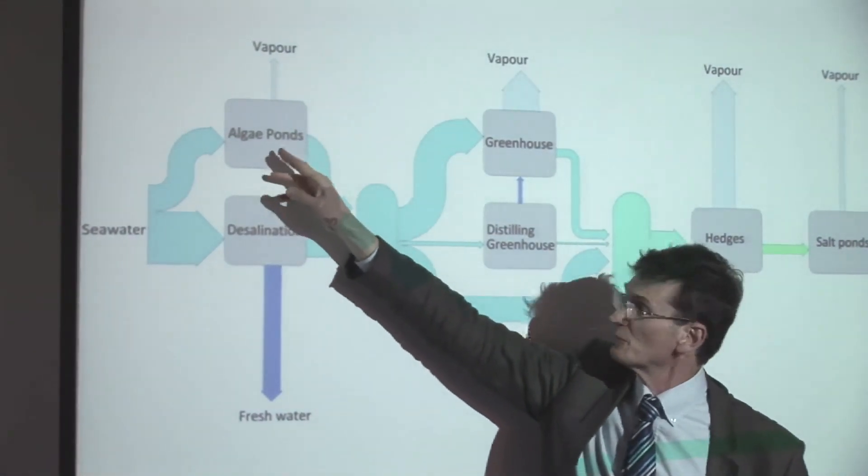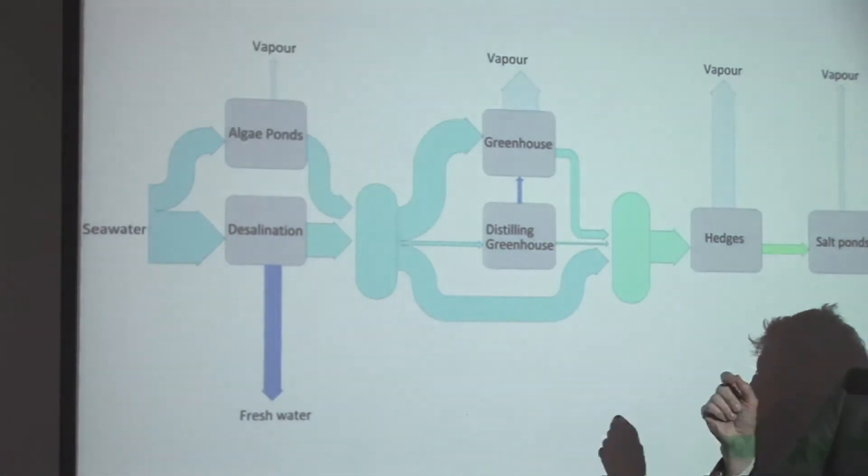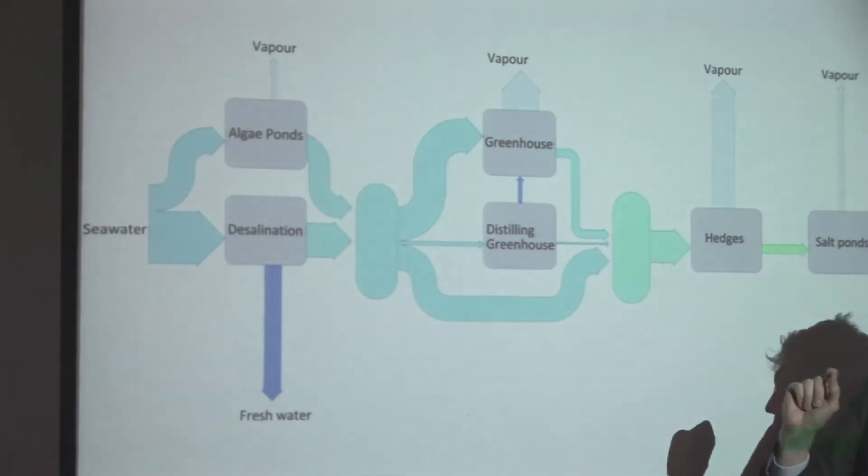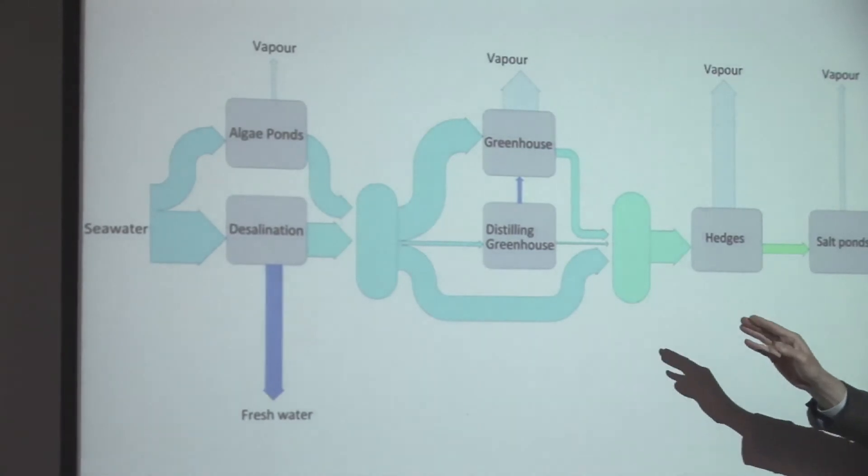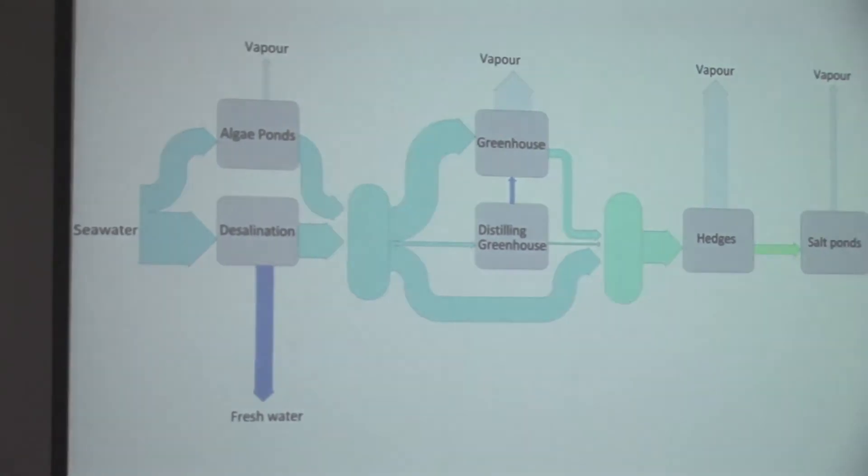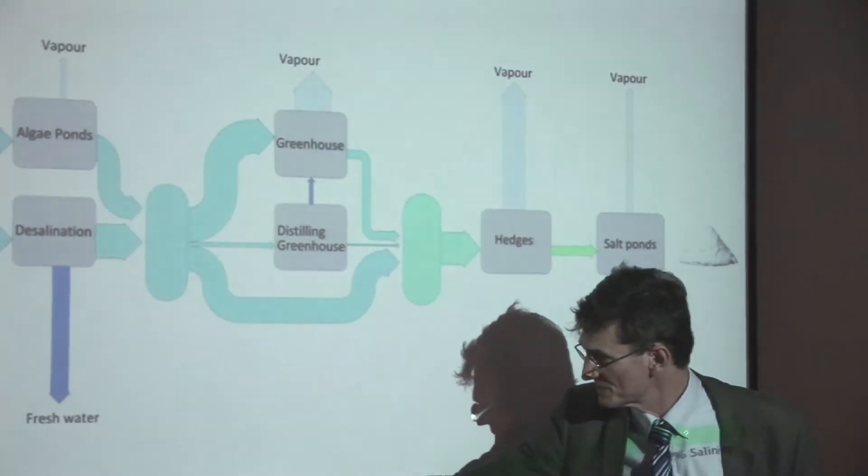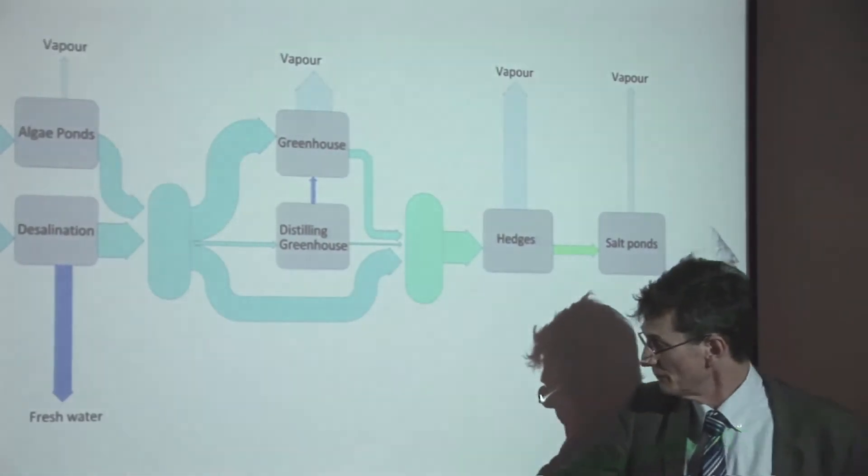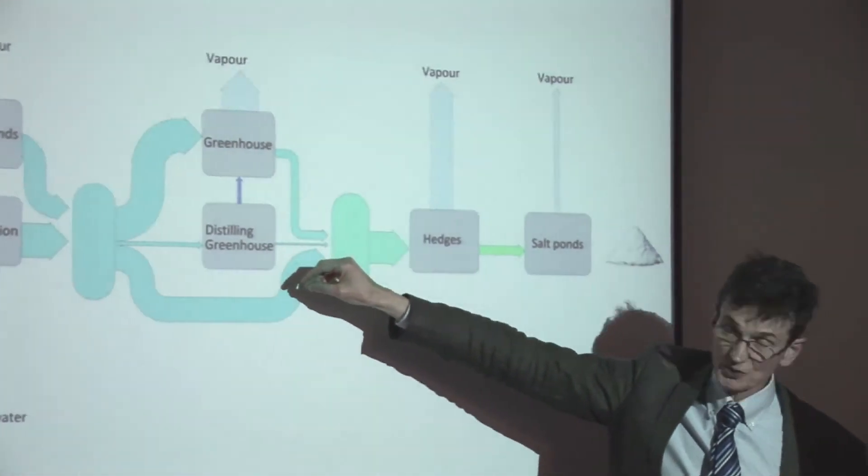The brine that comes out of that is 6 to 7 percent. Algae ponds, like at the moment, we're assuming that the algae need the lowest concentration of salt. As you go into our greenhouse, the greenhouse Munters pads can take quite high salinities.